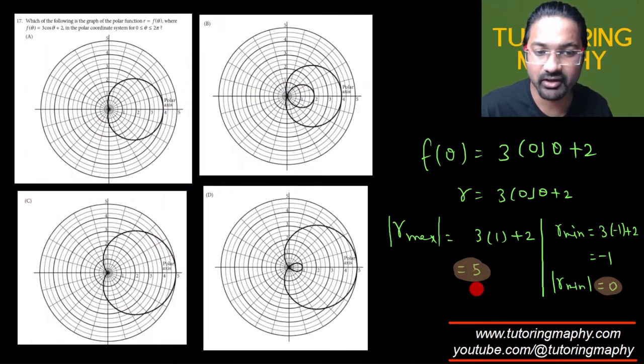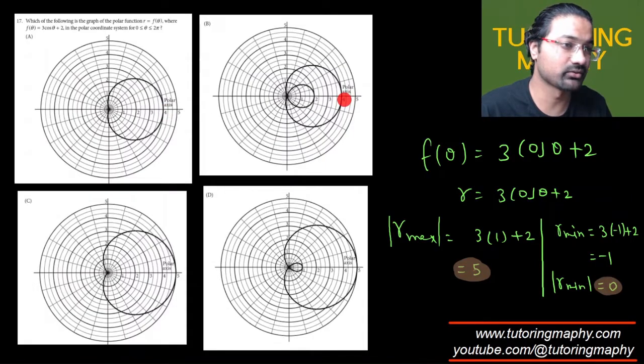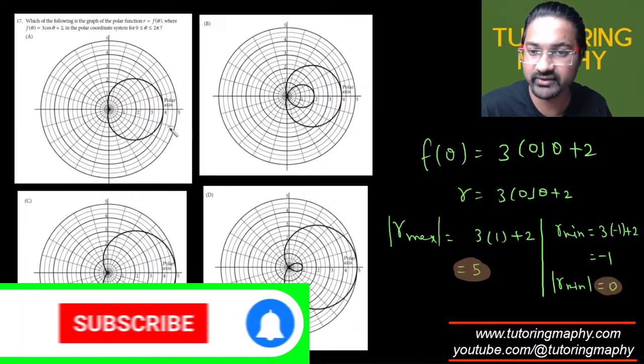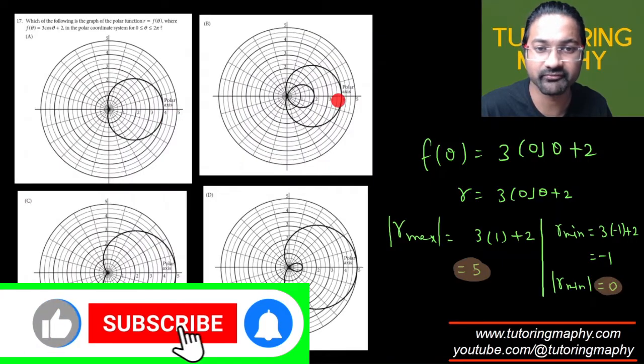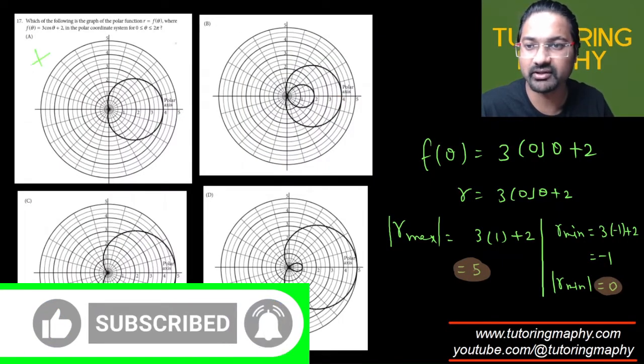But the maximum value of r from the center can be 5, not more than that. You can clearly see that this is only 4, this is only 4, these are only 4. It cannot be the answer because the maximum value of r should be 5, so A and B are not possible.